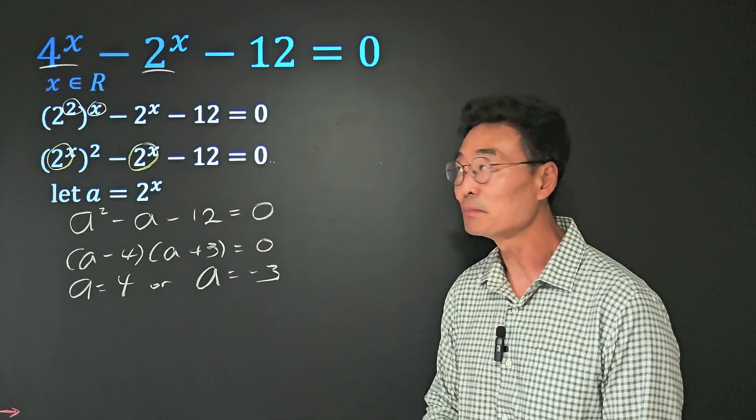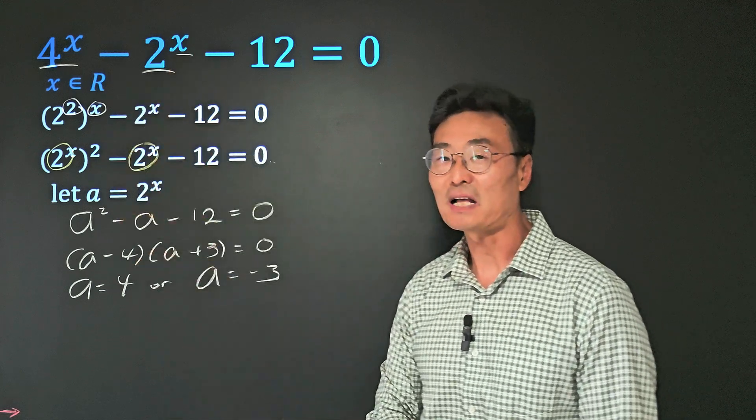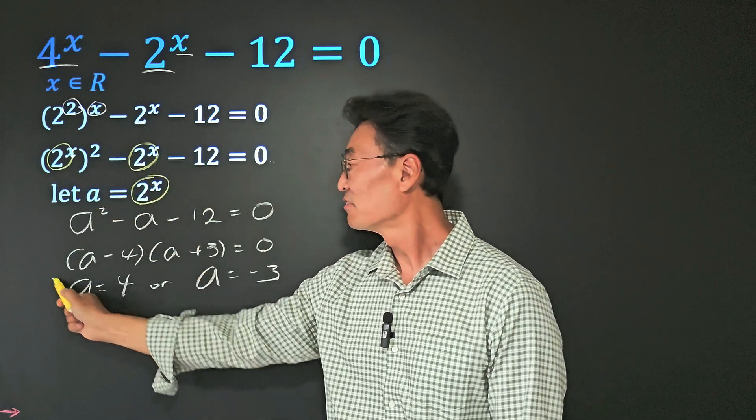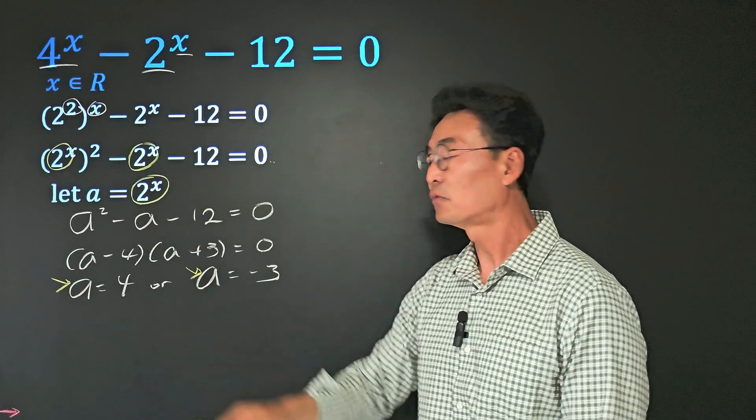We're not done. We're not solving for a. Keep in mind, we're solving for the value of x. So now it's time to take that 2^x and substitute it back in for a.